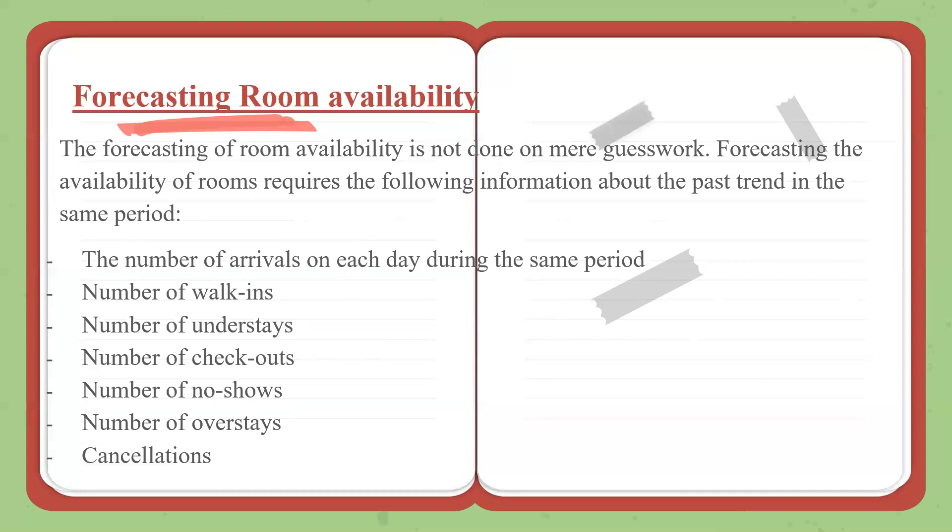If you are in October, last October, it makes a difference when you have these figures. Similarly, number of understays—guests who are checking out earlier than the checkout date. Number of checkouts, typically how many guests check out on an average day. Number of no-shows—guests who make a booking but do not show up. Number of overstays—extensions of their stay beyond their date of departure. Cancellations.